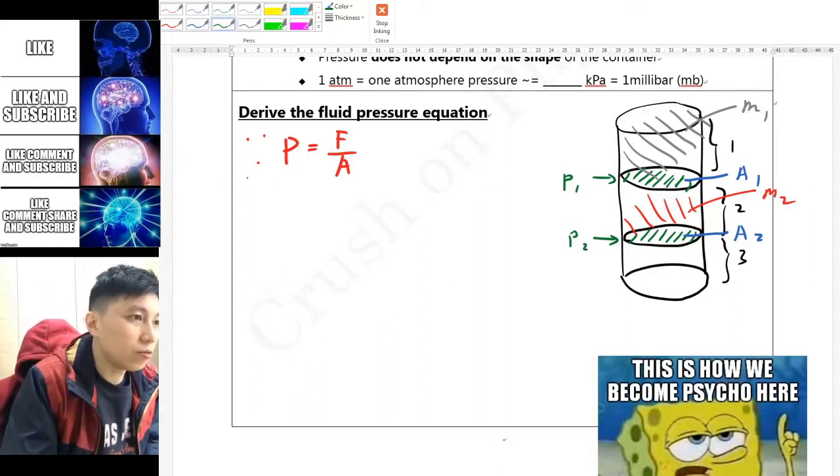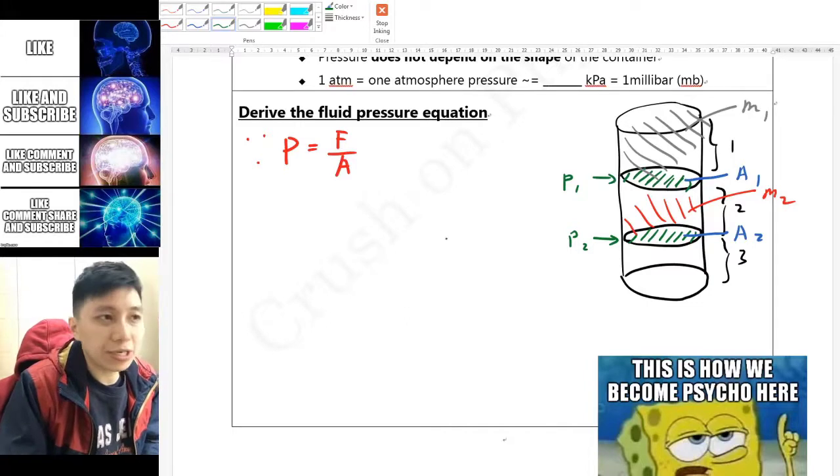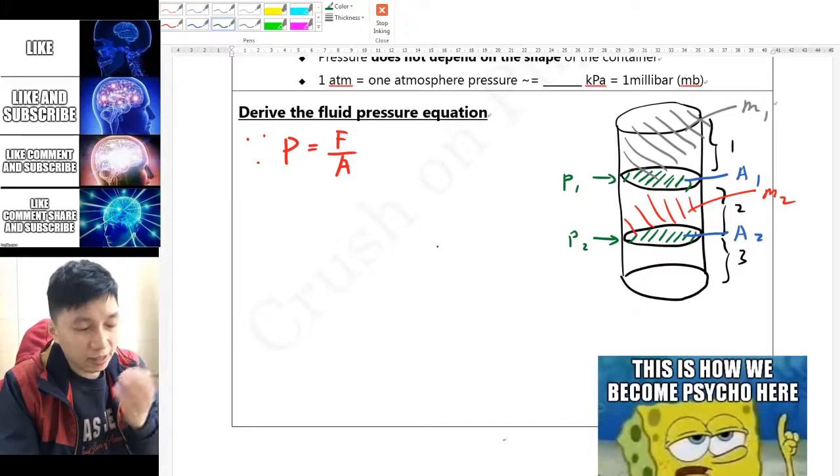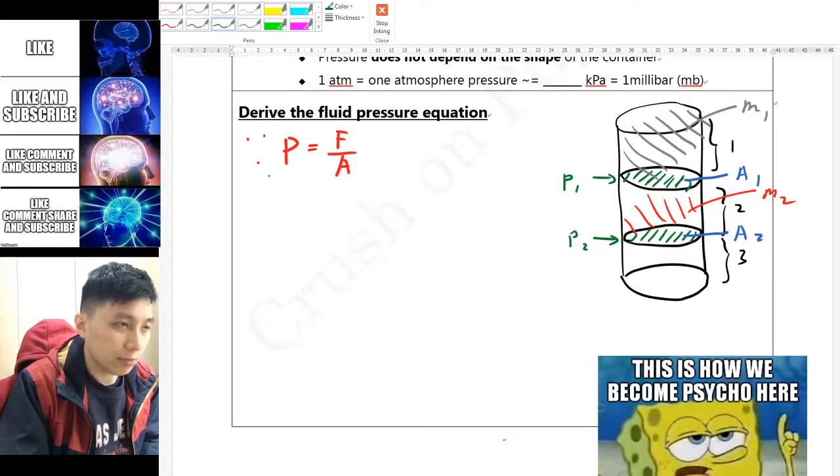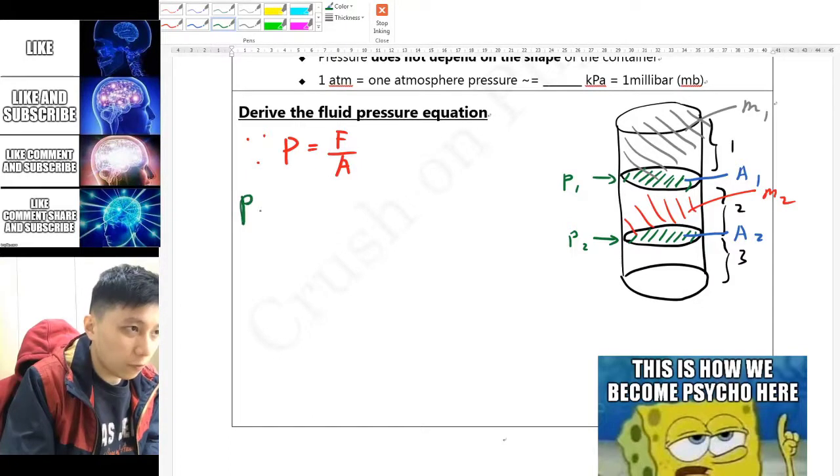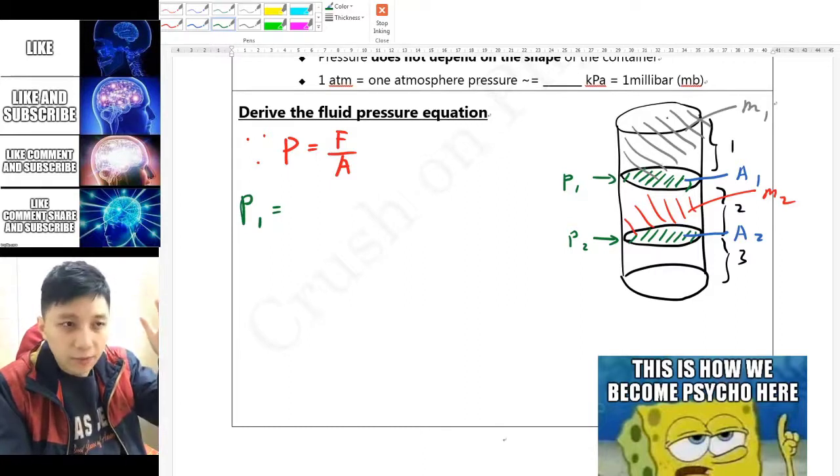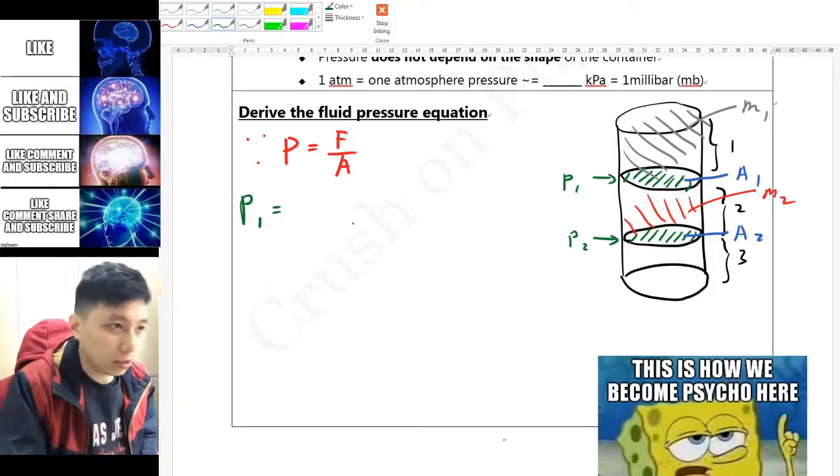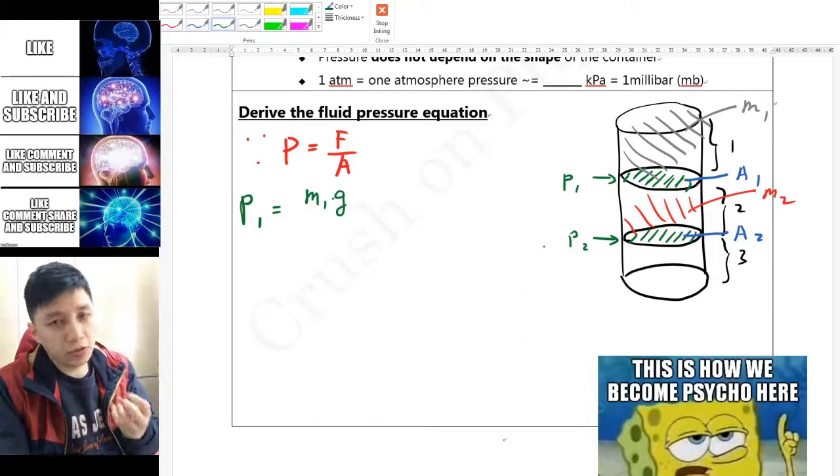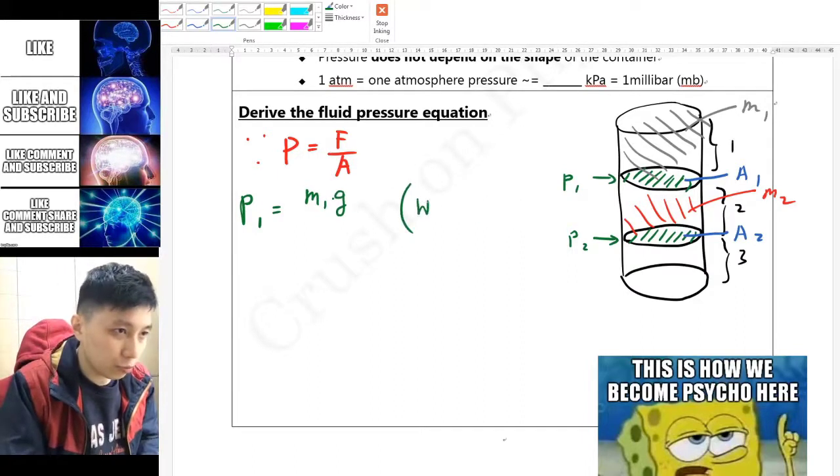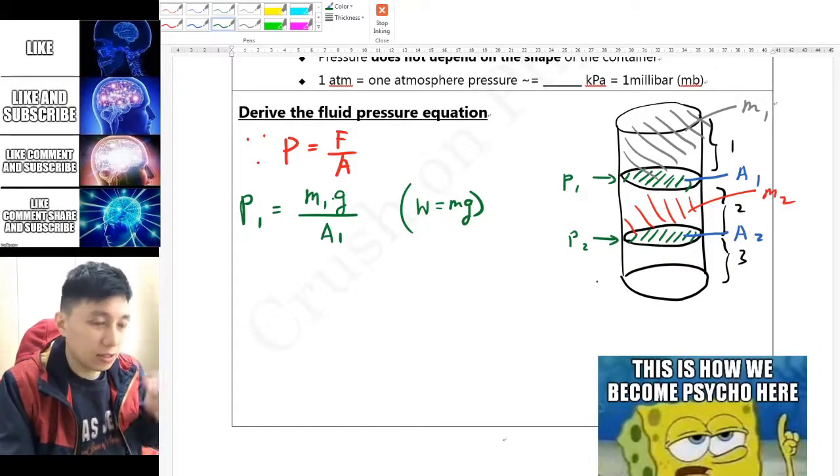And then the mass at the second layer, imagine these are filled with liquid, so this would be M2. If you're okay with this then we can apply the equation P equals F over A, which is the definition, to P1 and P2 separately. For P1 it's going to be the force which is against the weight of the liquid adding above it, and so that will be M1 times g because weight equals Mg, and then divided by A1.